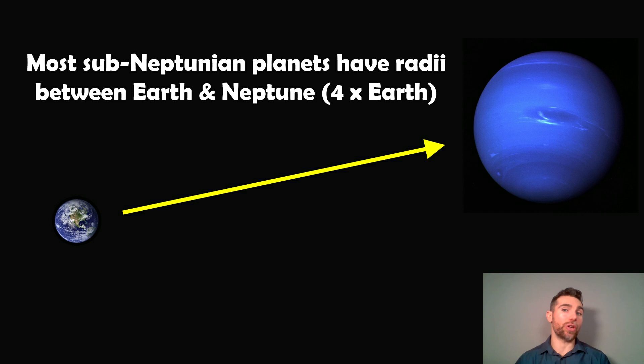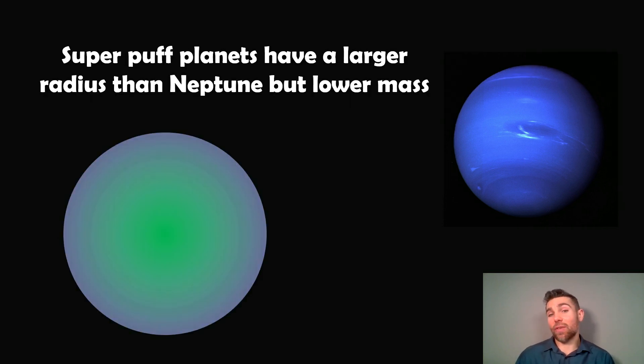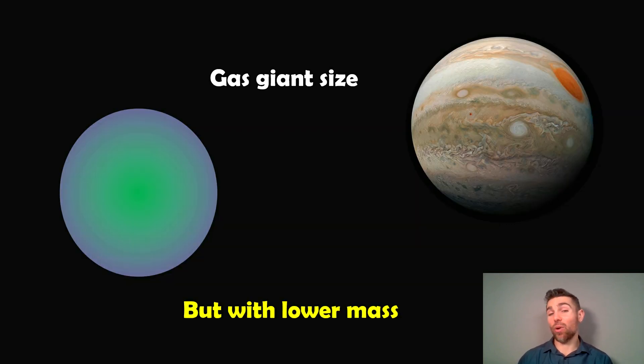Now, most sub-Neptonian planets have a radius between Earth and Neptune, which is between one and four times the radius of the Earth. And I say most because they don't all have a radius between that range. And that's where Super Puffs come in, because they do have a lower mass. Their mass sits in the range that will classify them as a sub-Neptonian. They're not more massive than a Neptune planet, but they are more massive than Earth. But they do have a considerably larger radius than that of Neptune. In fact, they can almost be gas giant in size. They can be up to the size of Jupiter, but they have considerably lower mass. So these are really puffed up planets, or at least they appear to be really puffed up planets. Low mass, probably low density, but quite large size.